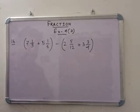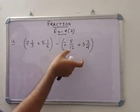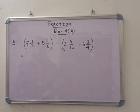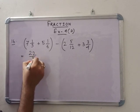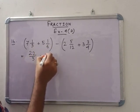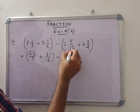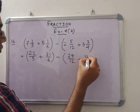So in number 16, see that: subtract the sum of 2 and 5 by 12 and 3 and 3 by 4 from the sum of 7 and 1 by 3 and 5 and 1 by 6. That means you have to add this one and add this one, then subtract these 2 fractions. So we can write here 7 and 1 by 3 is 22 by 3, plus 31 by 6, minus 29 by 12 plus 15 by 4.